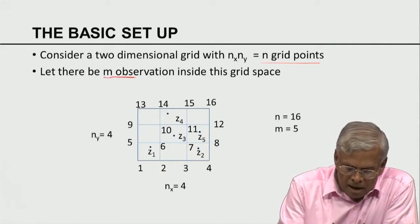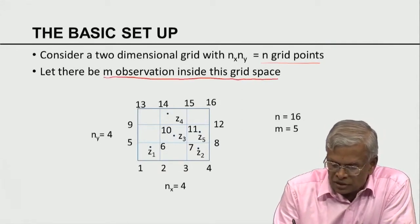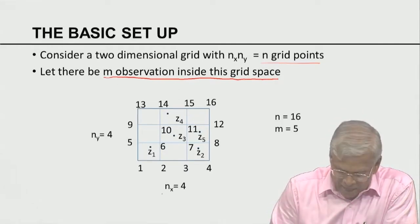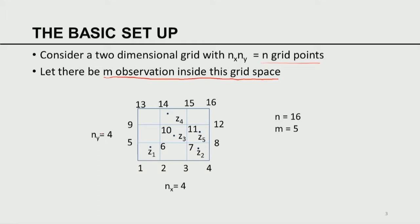Let there be m observations inside this grid space. As an example, I have nx equal to 4, ny equal to 4, so n is 16. I have a set of 5 observations z1, z2, z3, z4, and z5. We can think of these observations as scalar observations — temperature, pressure, humidity, or concentration of some chemical — essentially a scalar quantity.